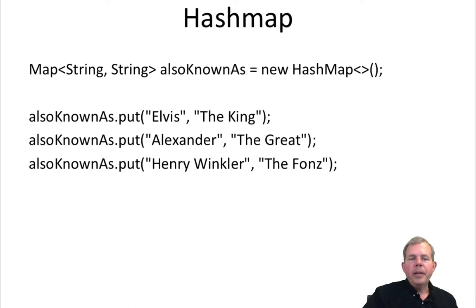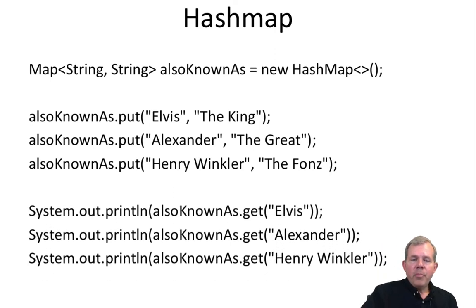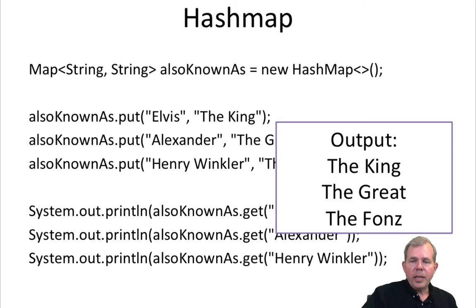I'm going to put three people into my list called 'also known as.' Elvis is known as the King, Alexander is known as the Great, and Henry Winkler is known as the Fonz. If I tried to print these, I would say: print the list entry for Elvis, print also known as Alexander, and print also known as Henry Winkler. When it prints, you're going to get the King, the Great, and the Fonz. We'll be working with some examples in a few minutes on creating hash maps.